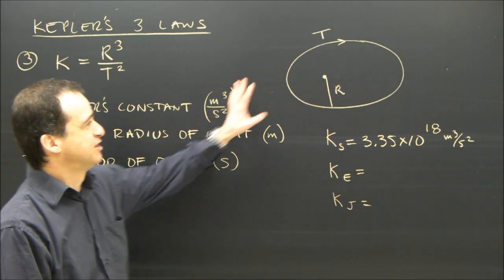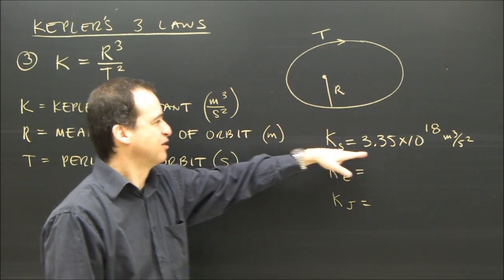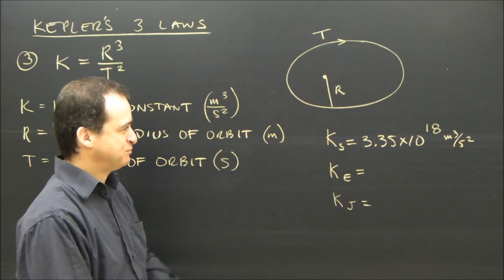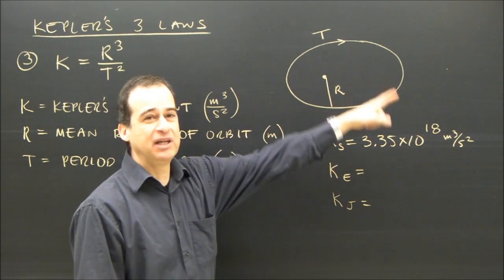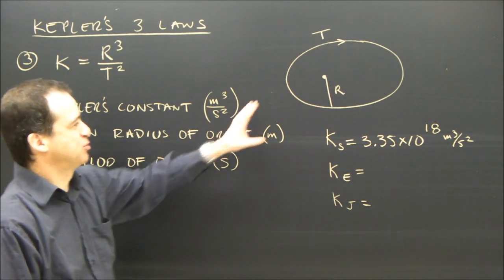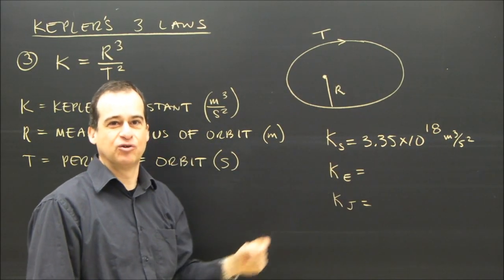So for a system like the sun, with the sun at the center, we have a constant, 3.35 times 10 to the 18 meters cubed per second squared. So any planet follows this relationship. What it means is there's a relationship between how far the planet is from the sun, and how long it's going to take to go around the sun.